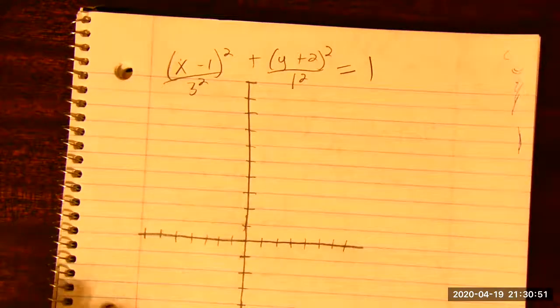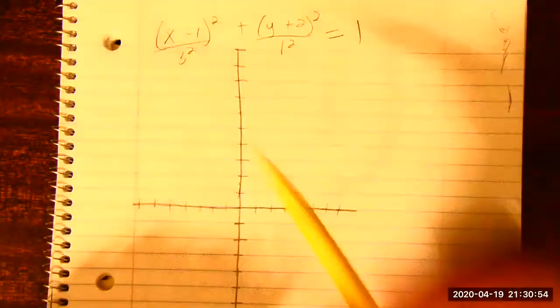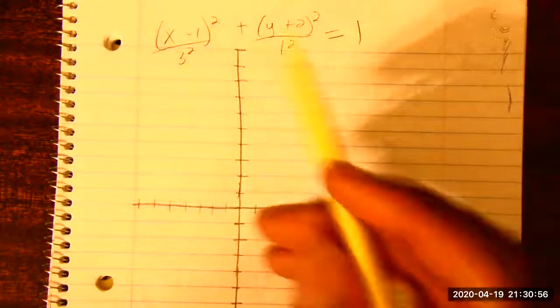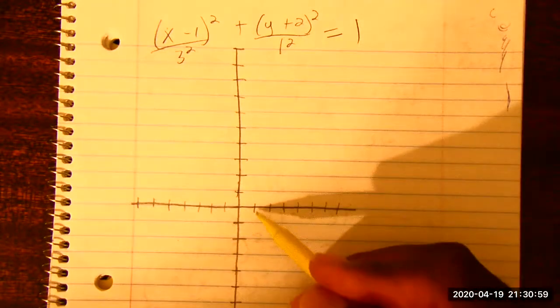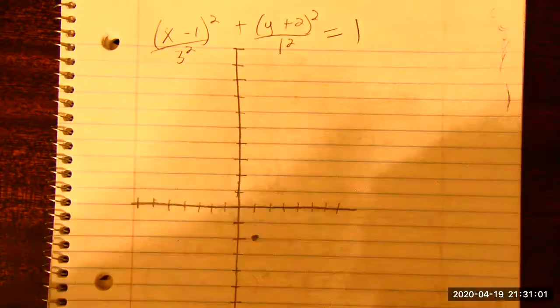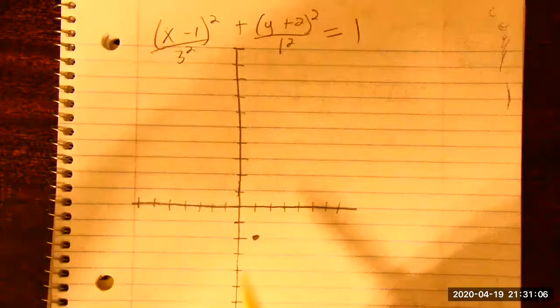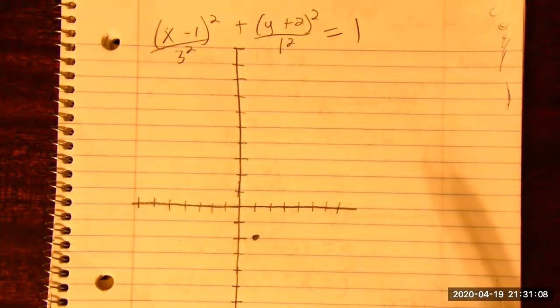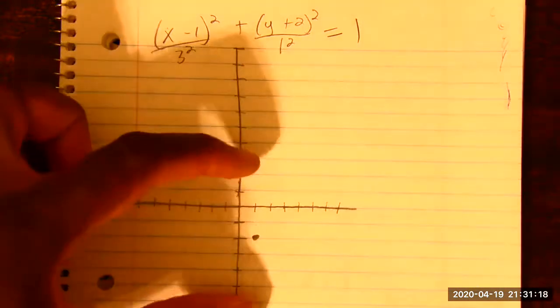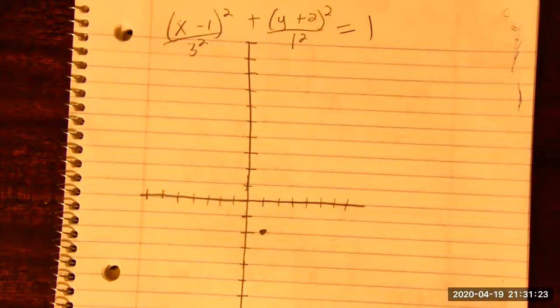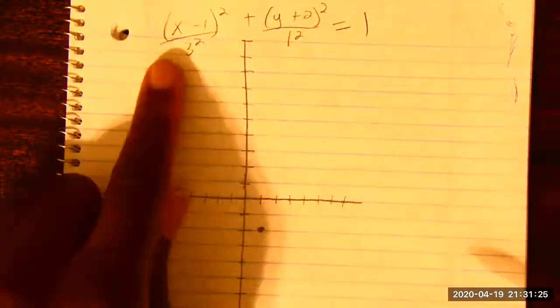X is horizontal displacement. So once we find the center, it's left 3 right 3. Y is vertical displacement. So once we find the center, it's up 1, down 1. Set equal to 1. That's the standard bearer. This helps us find the center. So I'm just going to graph this quickly on this pad.